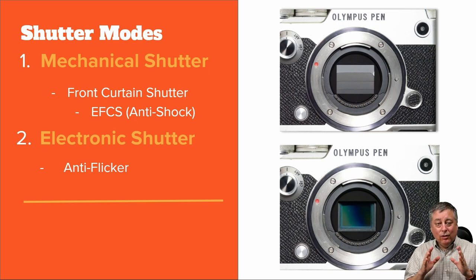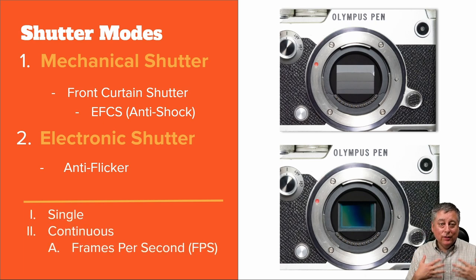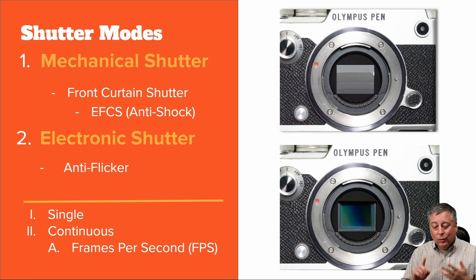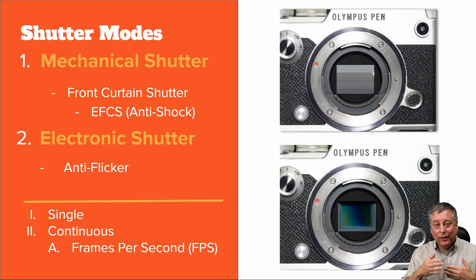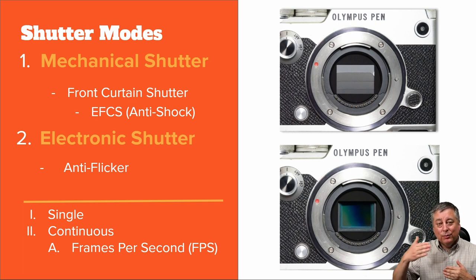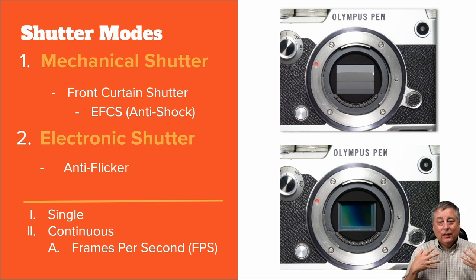But there are also subsets to both mechanical and electronic shutter that we need to talk about. Whether you're using electronic shutter or mechanical shutter, you're going to get a choice to use a single shot type shutter or a continuous shutter, which gives you a rating in frames per second — how quickly can it take images? A single shot is just you push the shutter button and it takes one picture. In continuous shutter mode you hold the shutter button down and the camera will continually take images as fast as it can, and that speed is usually referred to as frames per second. You might see a camera rated at 10 frames per second continuous.